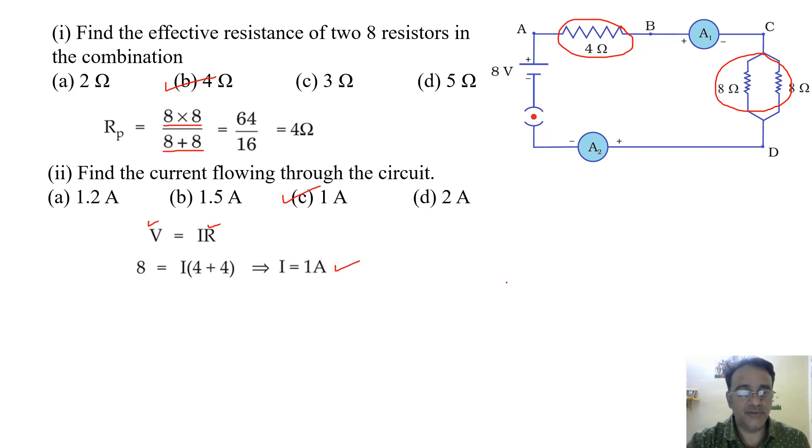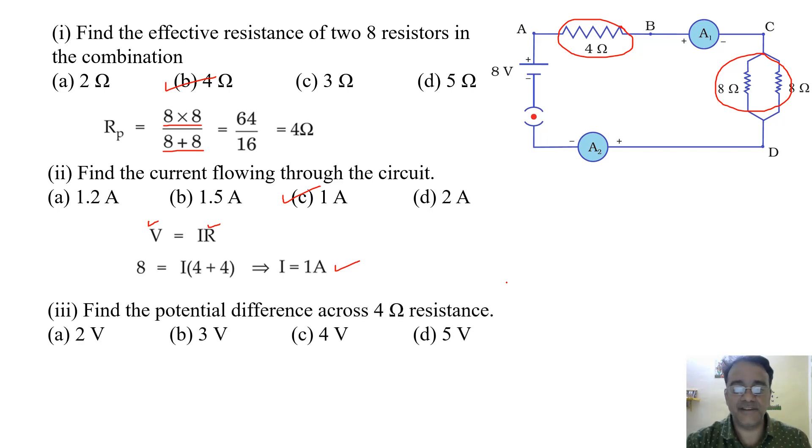Now we will move toward the third question. Find the potential difference across 4 ohm resistance. Now because it is connected in series, there will be voltage break. Current is the same. So we will use again ohm's law. Potential difference V equals IR formula. I will remain same that is 1 ampere and the resistance is 4. So 1 into 4 is 4 volt. So the correct option is C.